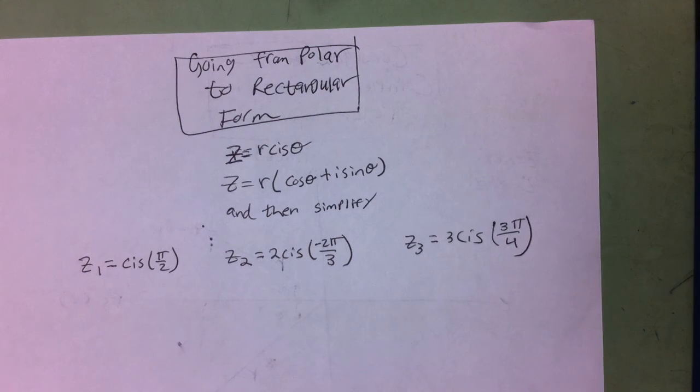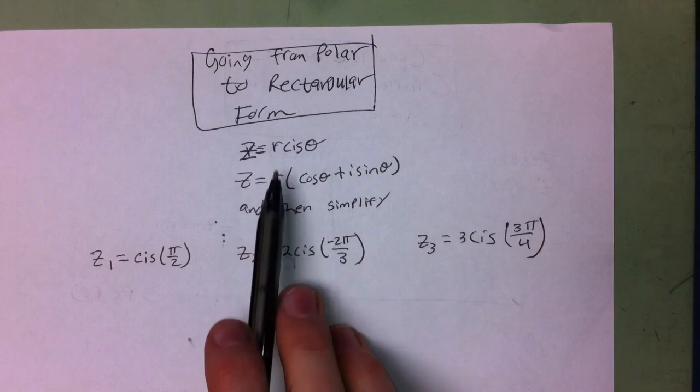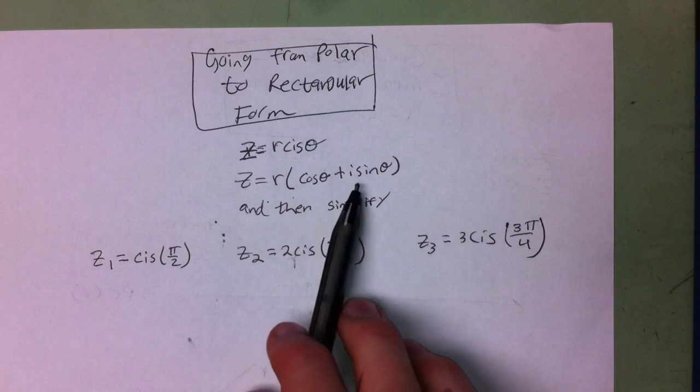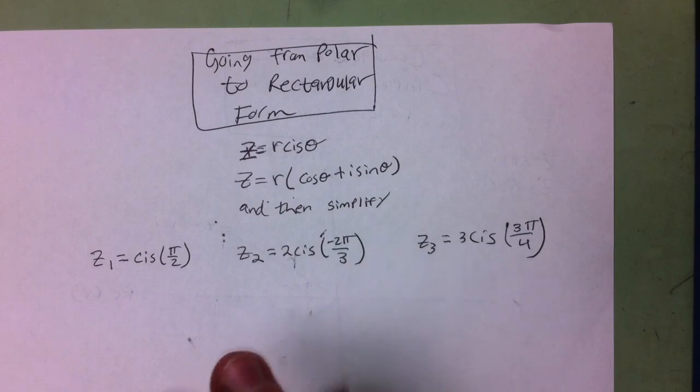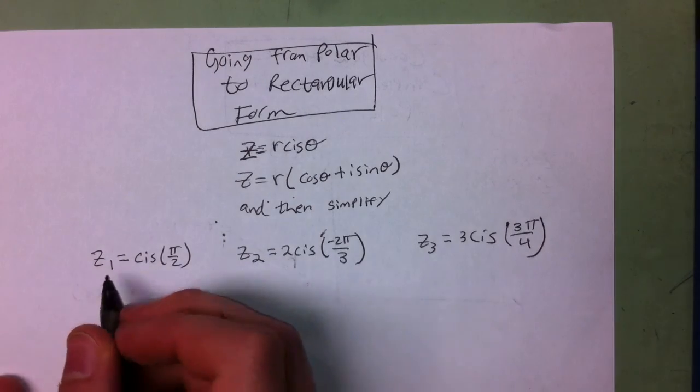In this video, we're going to go over how to go from polar to rectangular form. In my opinion, this is much simpler than going from rectangular to polar, because all you do is expand r*cis(θ) to r times the quantity of cos(θ) plus i*sin(θ), and then you simplify from there into rectangular form. So with our first example,